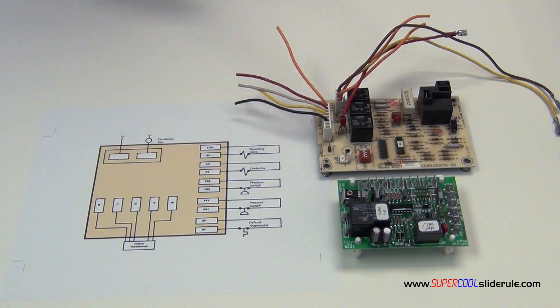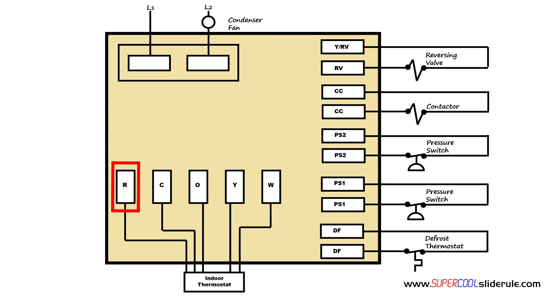The R is going to be our 24 volts that is supplied to the defrost board at all times. C is our common, O controls the operation of the reversing valve, Y controls the operation of the compressor contactor, and W is a terminal that is energized whenever the unit goes into a defrost. It turns on the emergency heat inside.